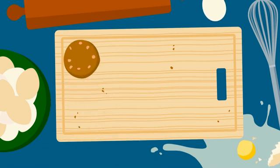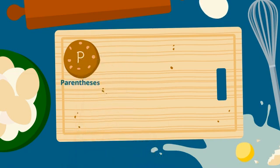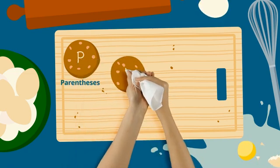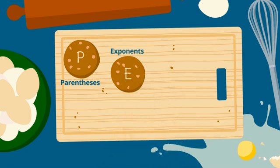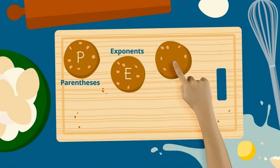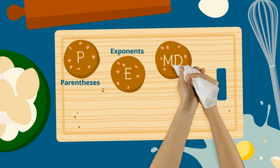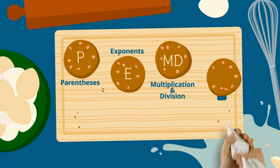The first step in the order of operations is P for parentheses. All expressions inside the parentheses should be evaluated first. E stands for exponents — exponents should be evaluated second. The next step is M and D, which stands for multiplication and division. After parentheses and exponents have been evaluated, you should multiply and divide, always from left to right.